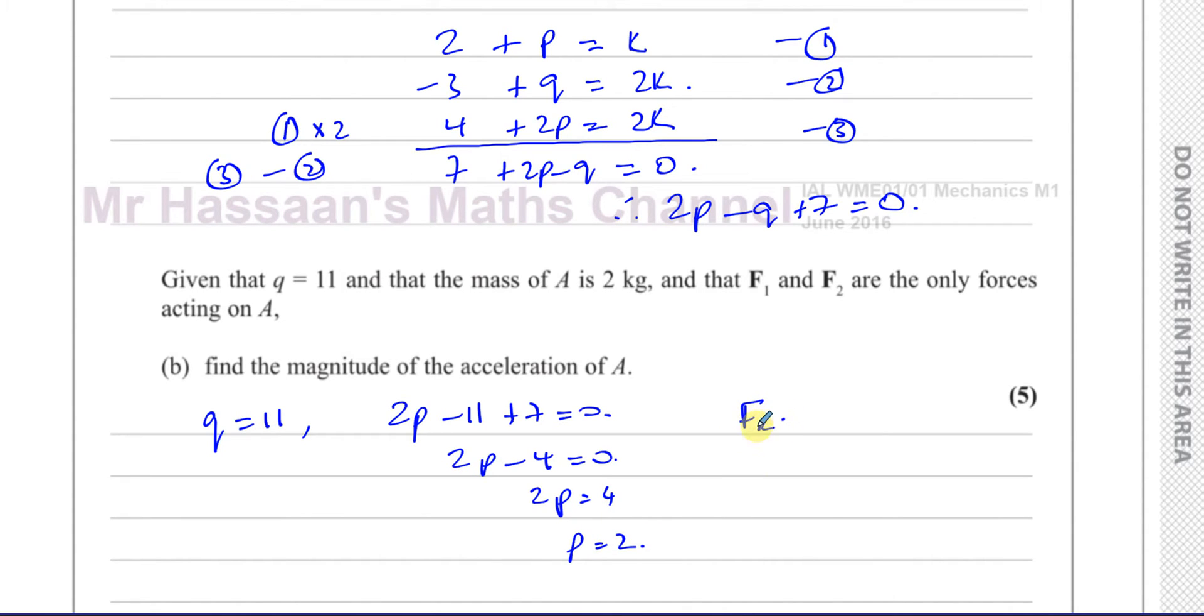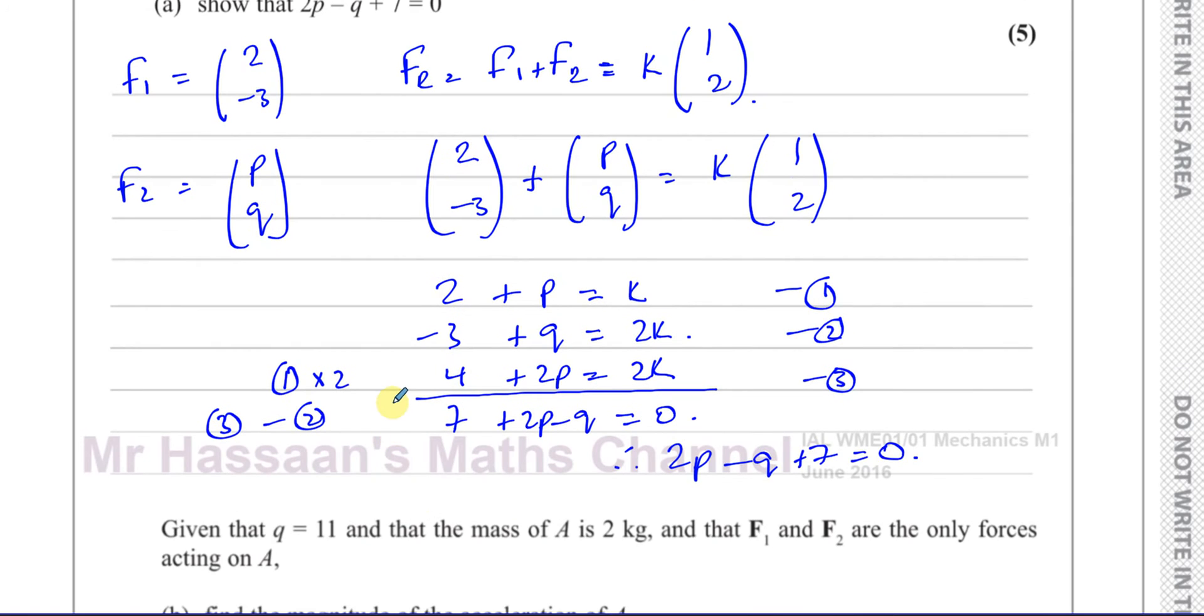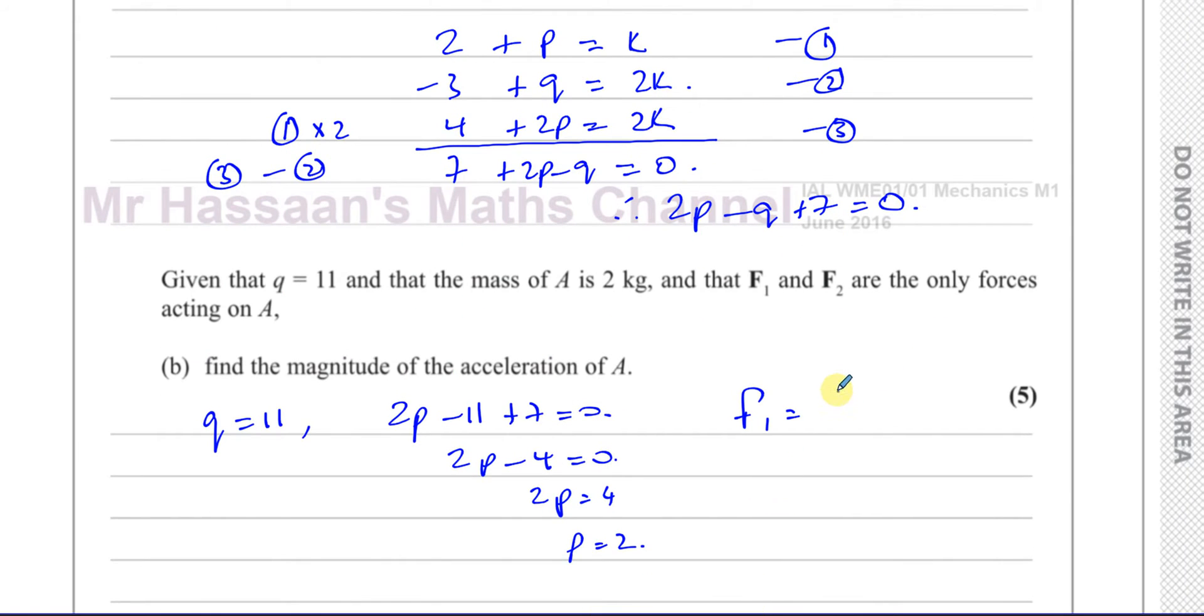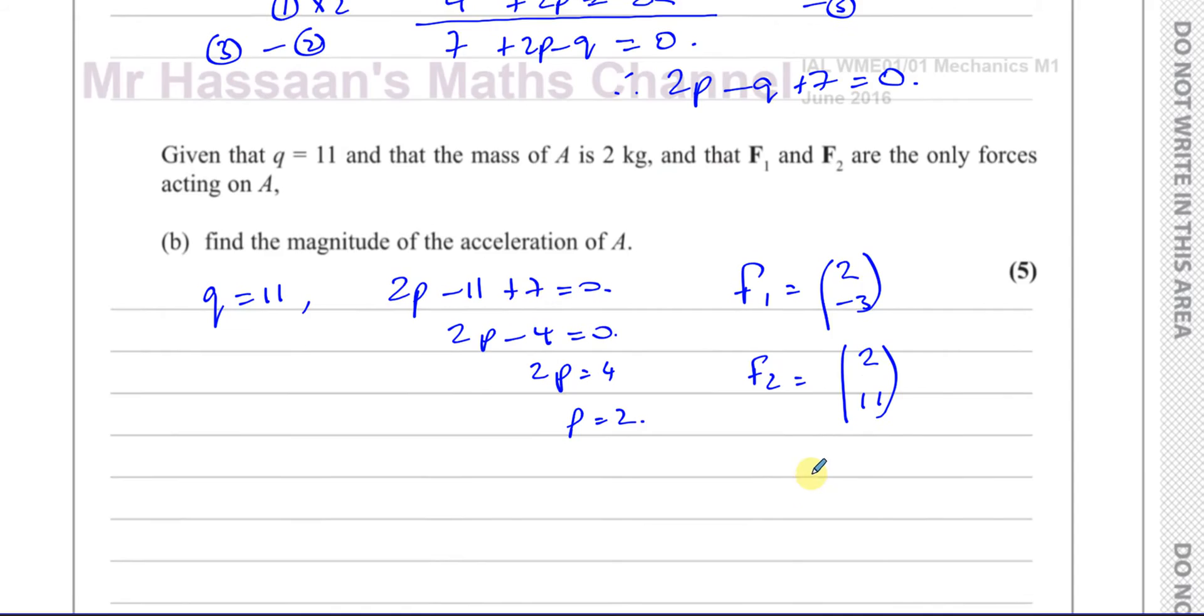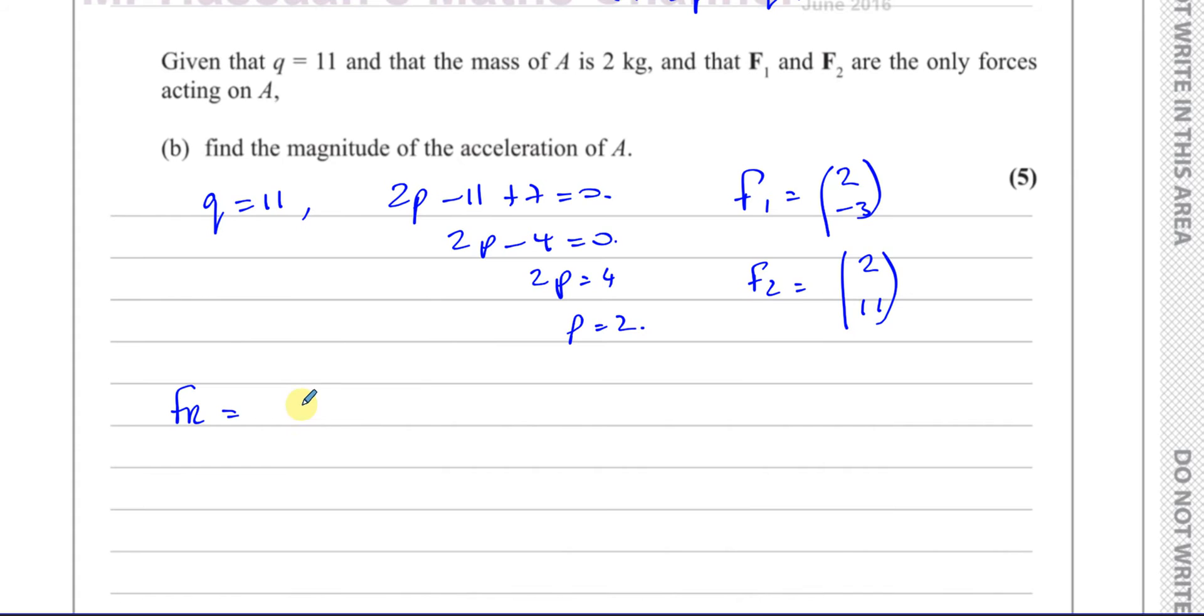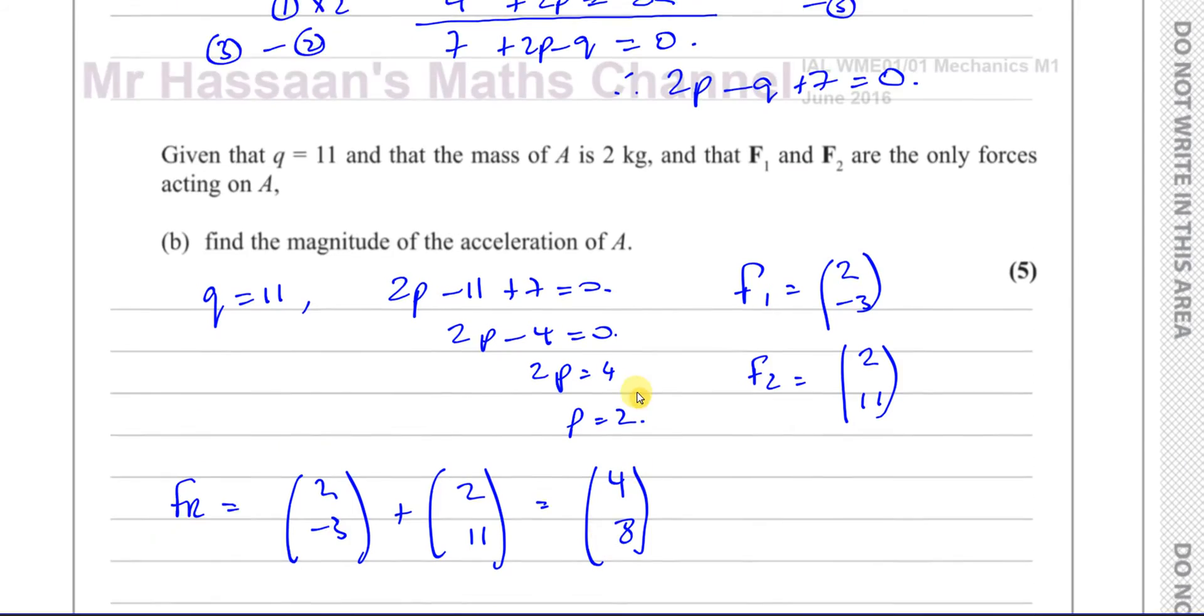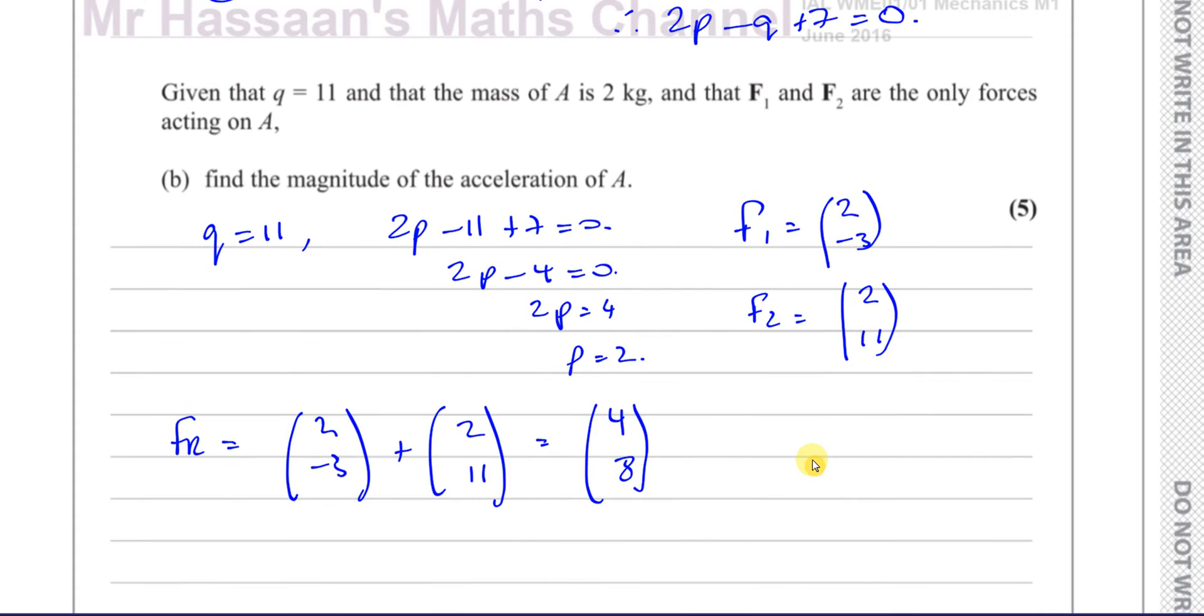That means we can find F2. We know F1 is (2, -3). And now we know what F2 is exactly, it's (P, Q), so it's (2, 11). So the resultant force is (2, -3) plus (2, 11), which is (4, 8). So we can see it's actually parallel to (1, 2). Yeah, it is, that's like 4 times (1, 2).